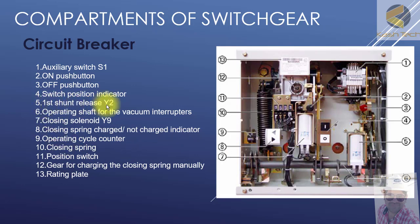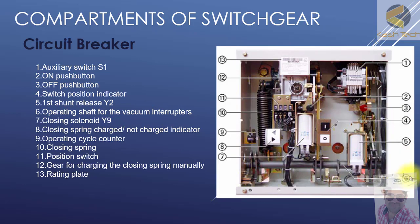Number five is the first shunt release — you can also call this the tripping coil. It is the first tripping coil operating rod for the vacuum interrupter. Number six is the operating rod, which drives the vacuum interrupter unit, opening or closing the breaker.